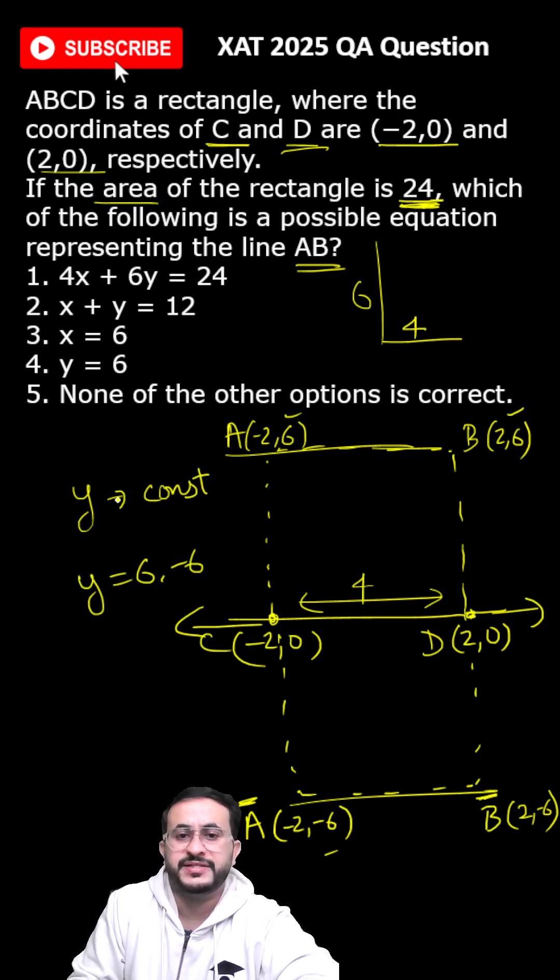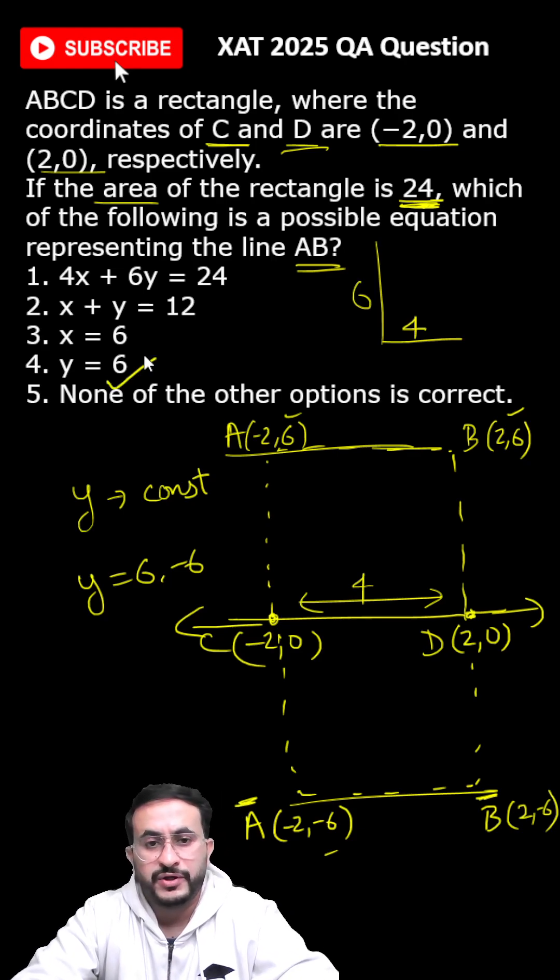So y = 6 or -6. Among the options, we have y = 6.